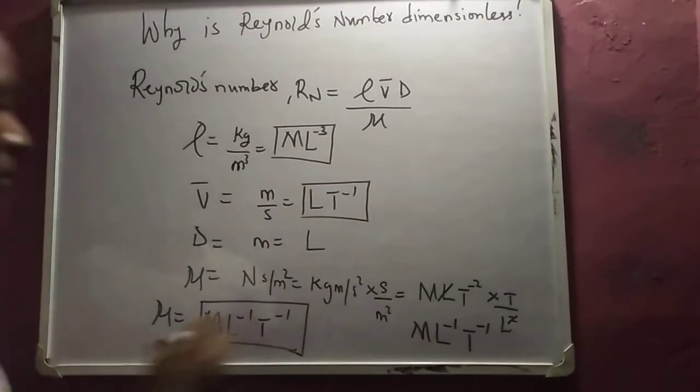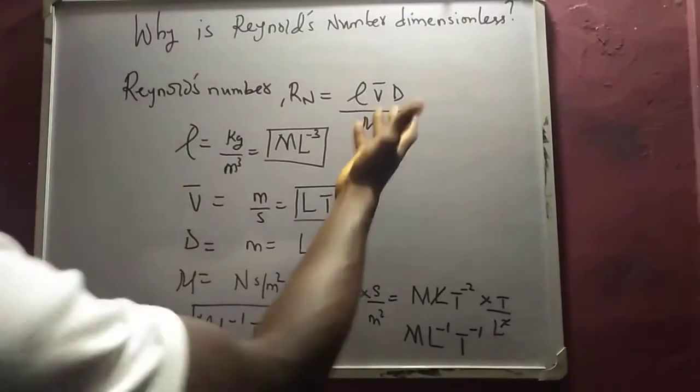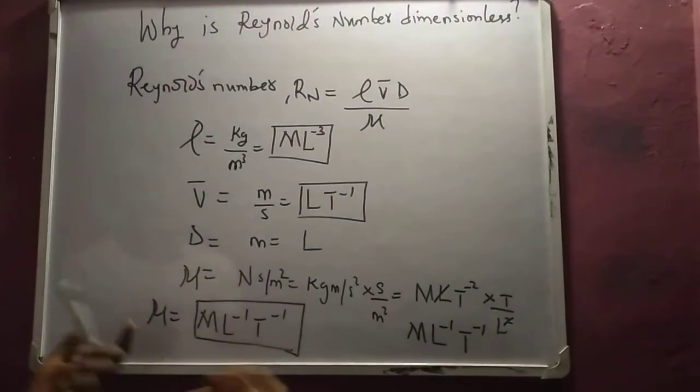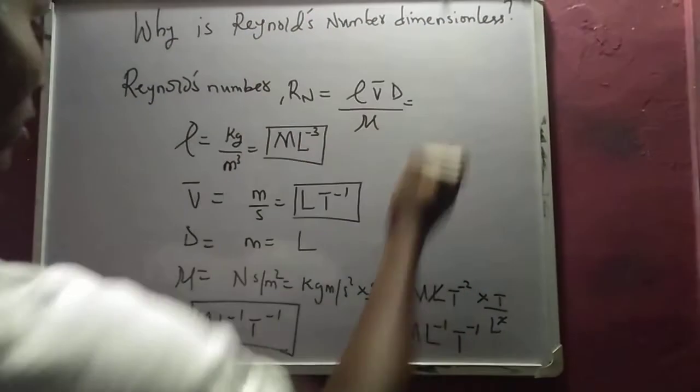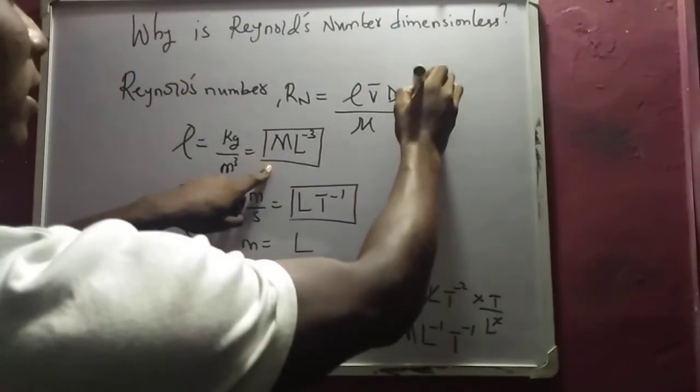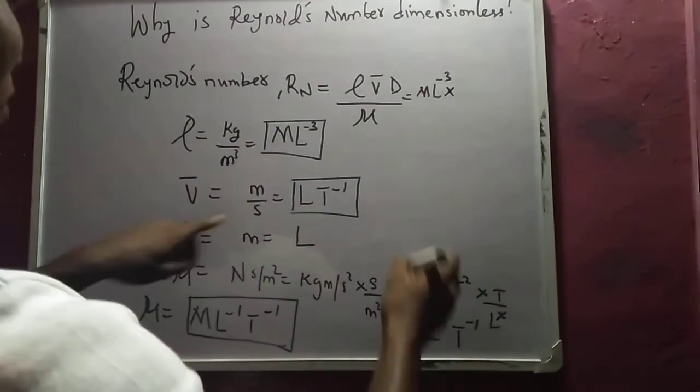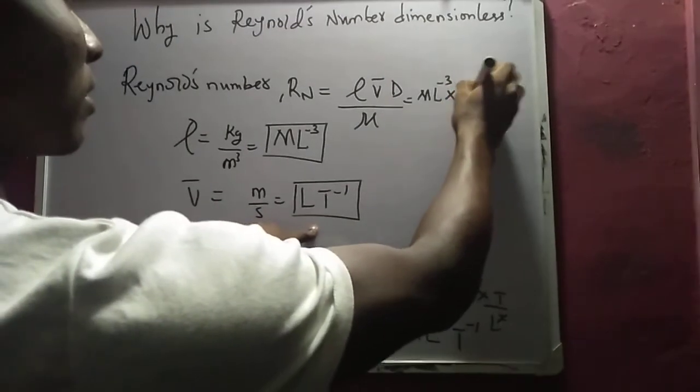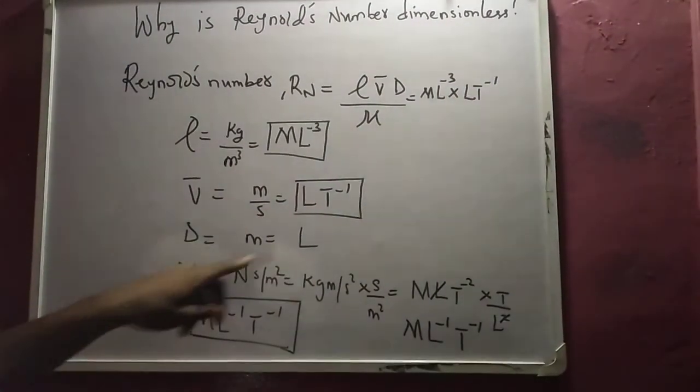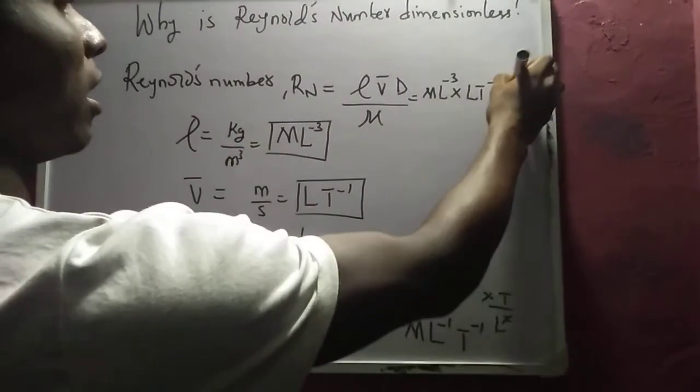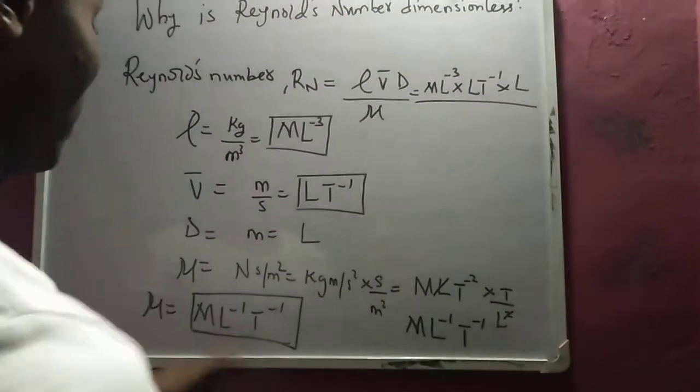So if you check this out, you've seen it. And then if you bring these parameters here, you get ρ times V times D, all over μ which is ML⁻¹T⁻¹.